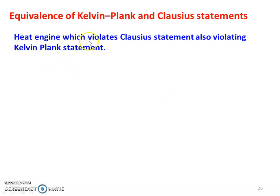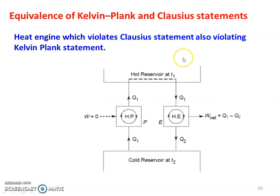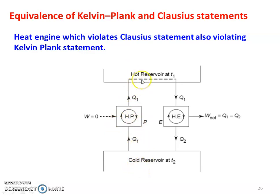A heat engine which violates Clausius's statement is also violating Kelvin-Planck's statement. To prove this, we consider a system with two reservoirs: a hot reservoir at temperature T1 and a cold reservoir at temperature T2. There is a heat pump transferring heat from the cold reservoir to the hot reservoir with W equal to zero — without any work. This is not possible; it violates Clausius's statement.